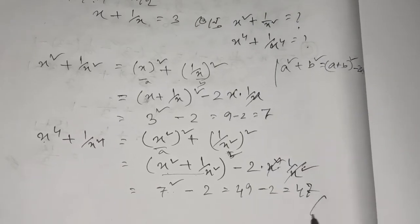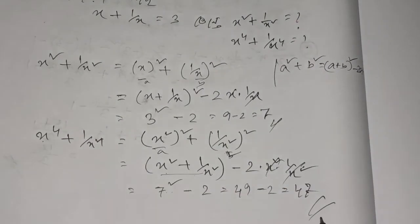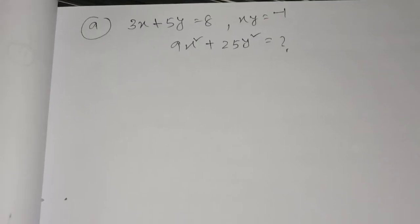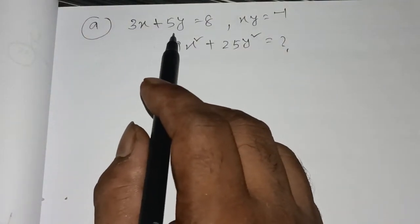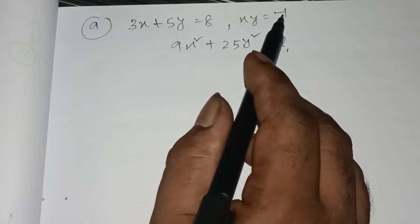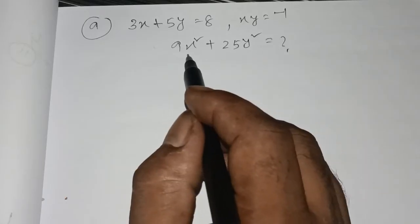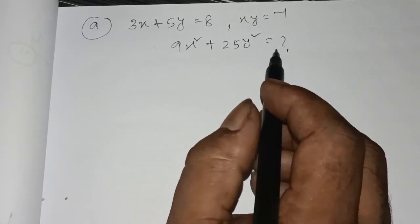The result is 47. So we have 7 and we have 47. Now, we have 3x plus 5y equal to 8, and xy equal to minus 1. So we need 9x square plus 25y square.